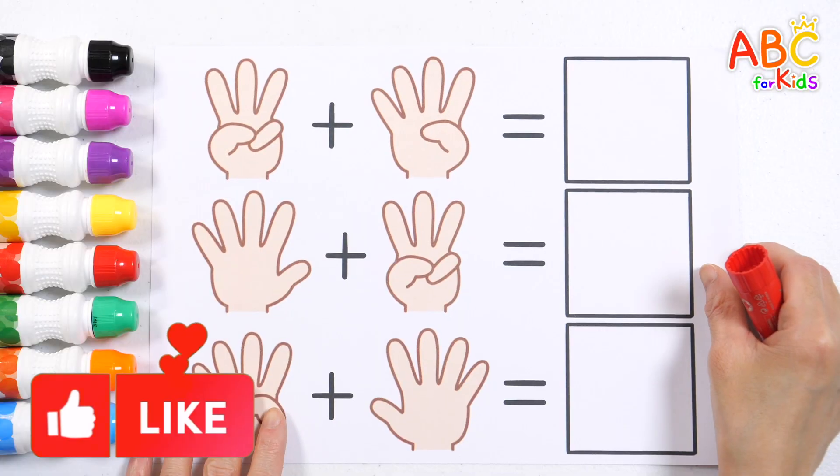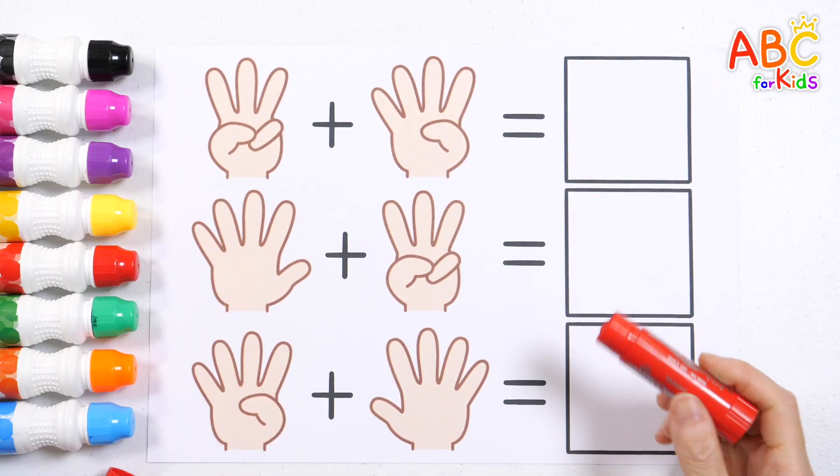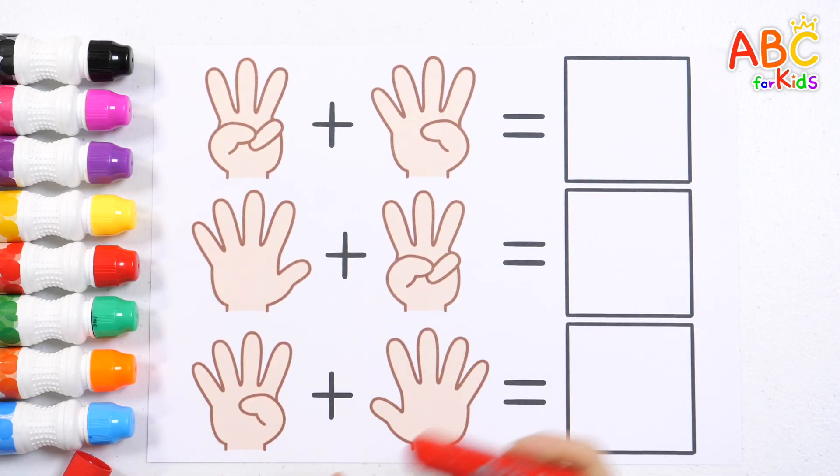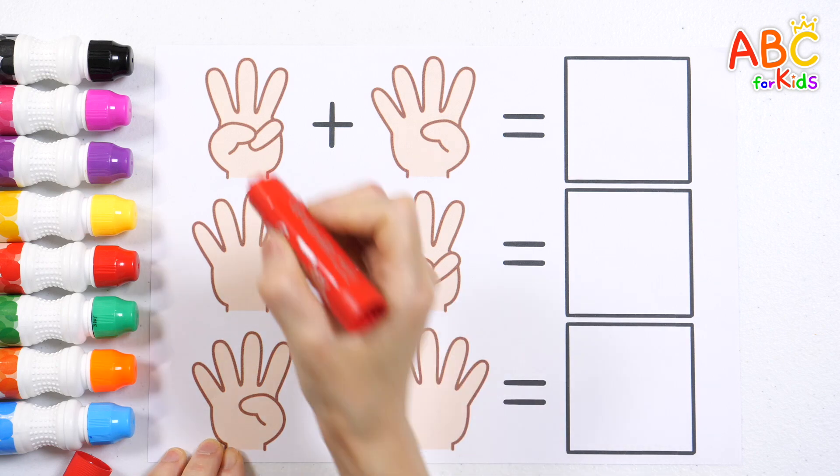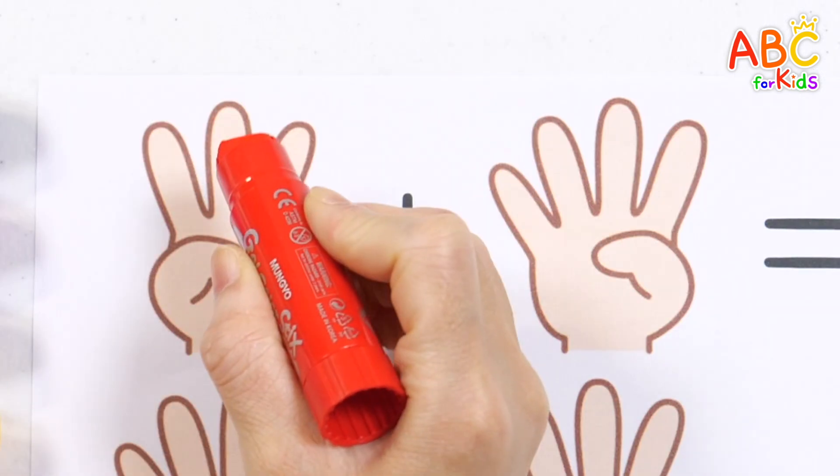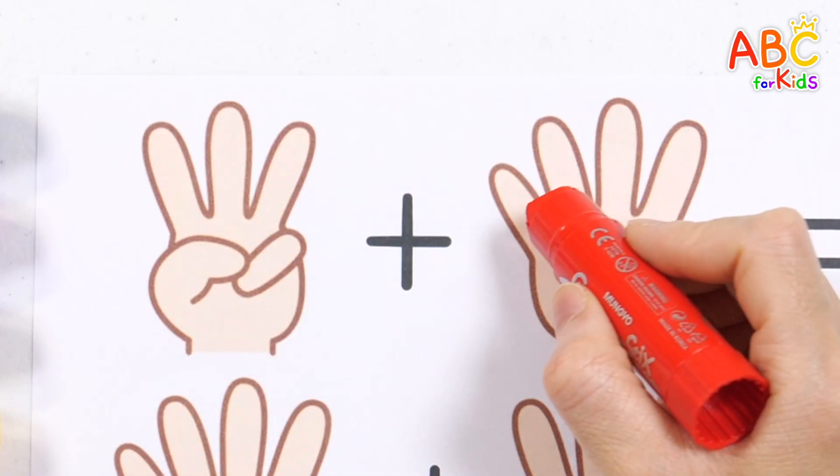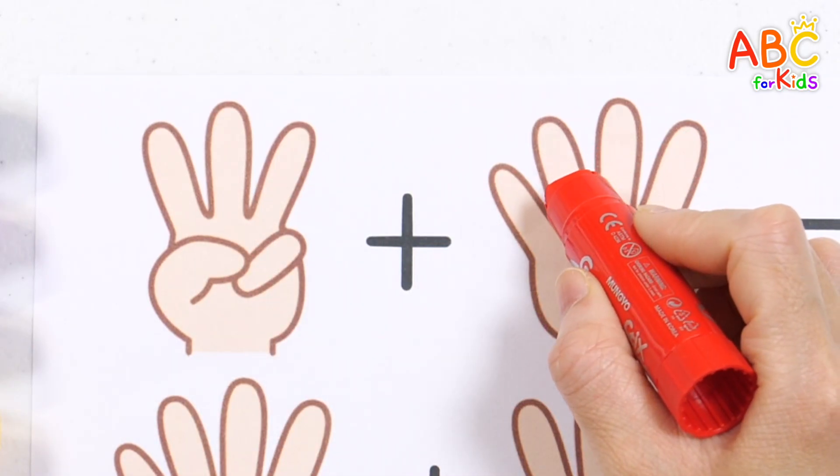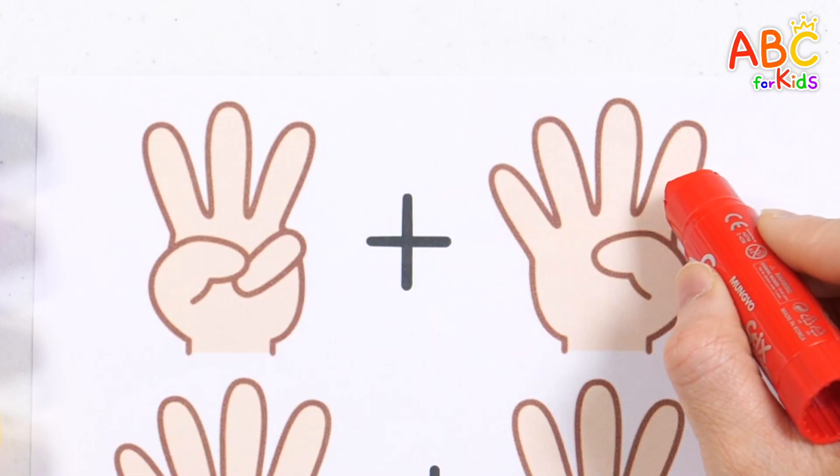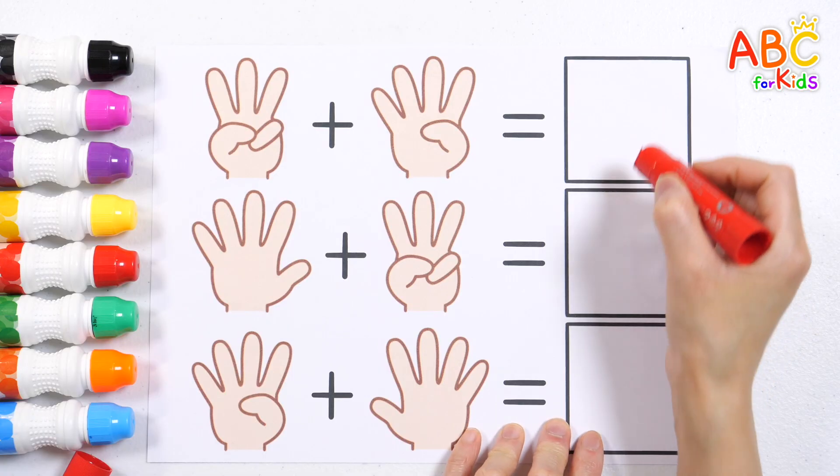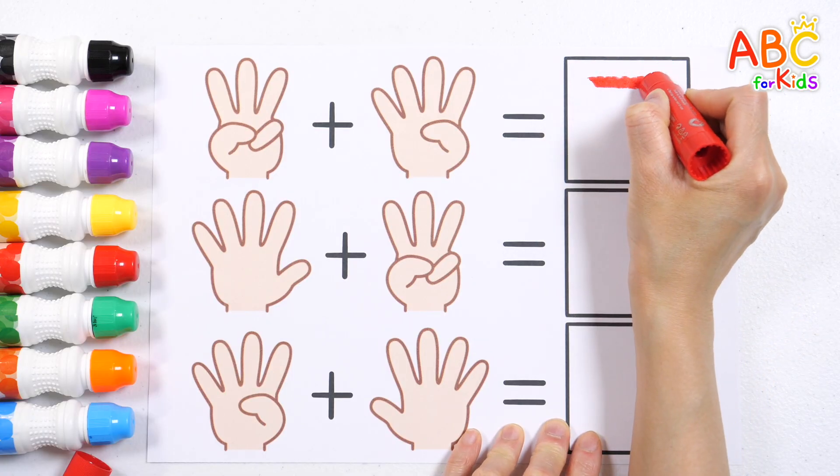Guess the simple addition. Let's count how many fingers are spread out and write that number in the blank space. One. Two. Three. Four. Five. Six. Seven. Open it up when it comes down. There are seven fingers showing.